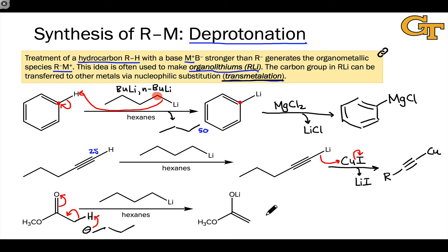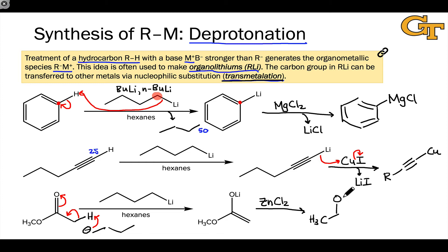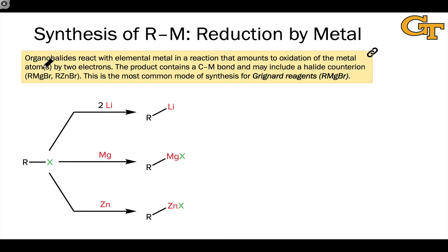Transmetallation also works for other types of organolithiums involving resonance stabilization. We could transmetallate a lithium enolate to zinc by treating with zinc chloride, ZnCl₂, through a nucleophilic substitution mechanism where the oxygen acts as a nucleophile and zinc as an electrophile. This generates a zinc enolate along with LiCl. Transmetallation starting from an organolithium is a great strategy for generating these less reactive organometallic compounds.